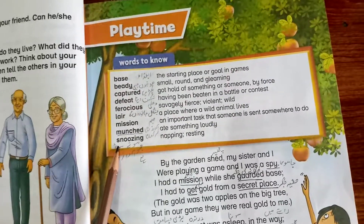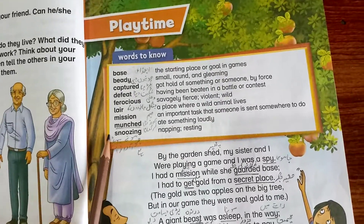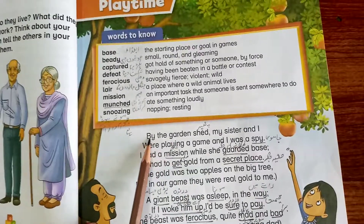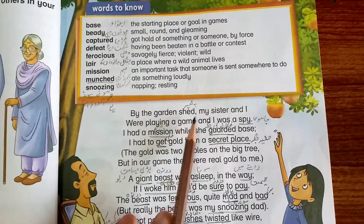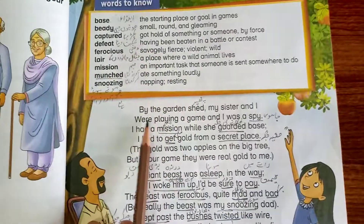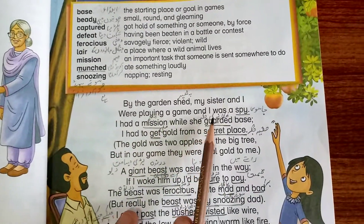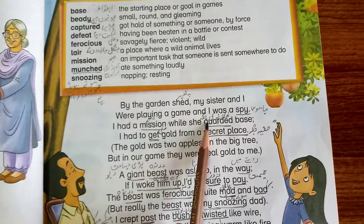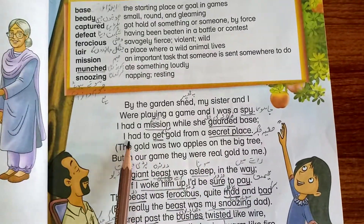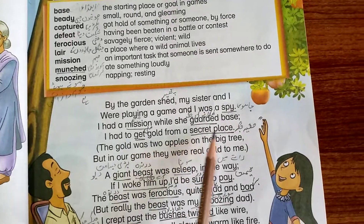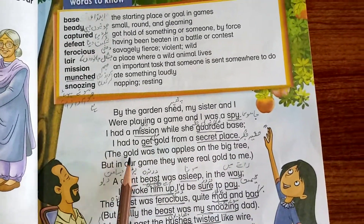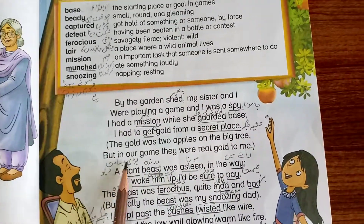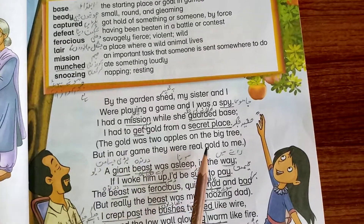So let's start the reading, then I will explain to you line by line and then I will explain to you thoroughly. By the garden shade my sister and I were playing a game and I was a spy. I had a mission while she guarded base, I had to get gold from a secret place. The goal was the apple on a big tree, but in our game they were real gold to me.